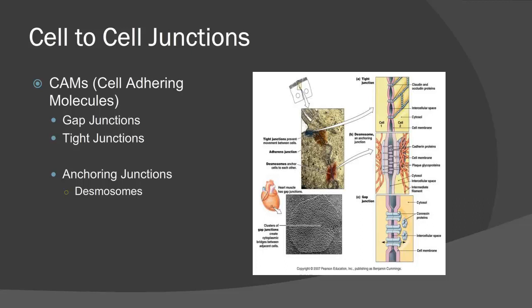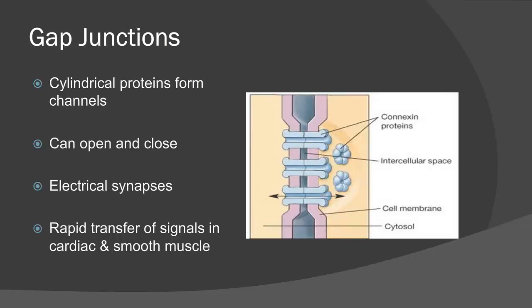Gap junctions are proteins that hold adjacent cells together. The functions of these junctions are to allow for transport of substances — whether they be ions, other proteins, or mRNA — in between adjacent cells. These gap junctions are not permanently open, meaning they can open and close. Another important function of gap junctions is to serve as electrical synapses, meaning that the exchange of ions between adjacent cells is crucial for nervous communication or hormonal signaling, allowing rapid transfer of signals between adjacent cells.